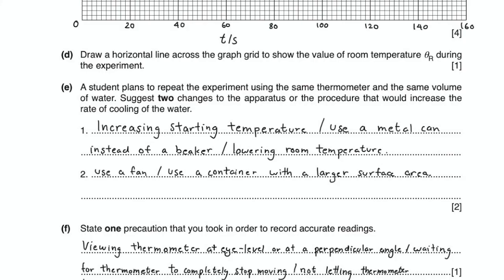Other ways are to use a metal can instead of a beaker, lowering room temperature, using a fan, and using a container with a larger surface area.